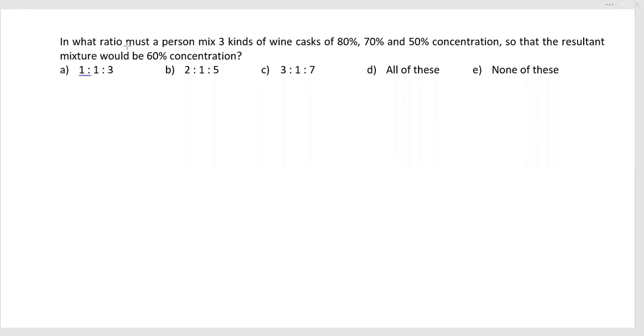In what ratio must a person mix three kinds of wine casks of 80%, 70%, and 50% concentration, so that the resultant mixture would be 60% concentration?